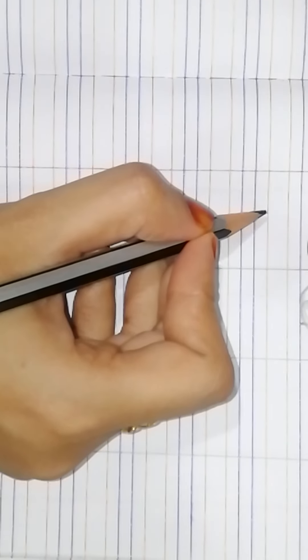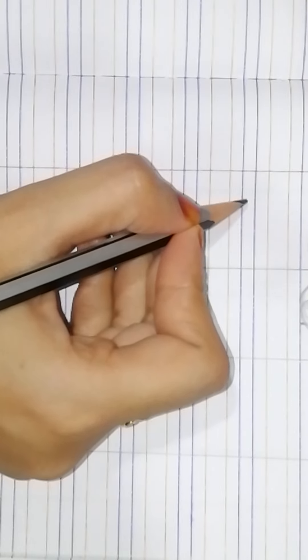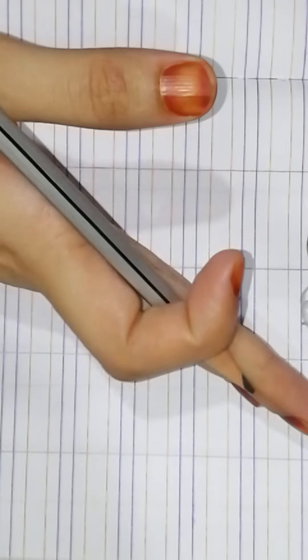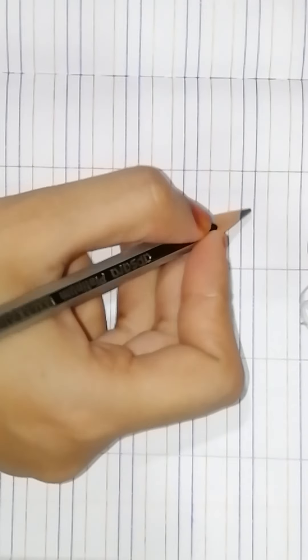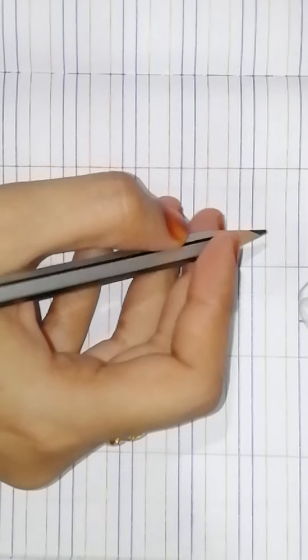So, your hand should start in a slanting manner, as a slanting lines jaogi, aur pura complete honne tak, aapko haath uthana nahi hai, pencil ispa se. So, now, look carefully, how do I write capital B?